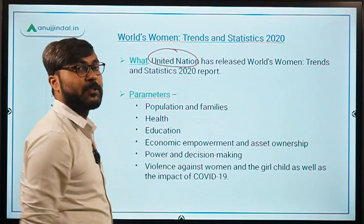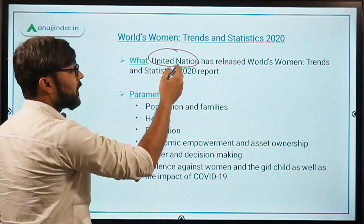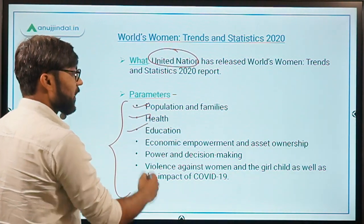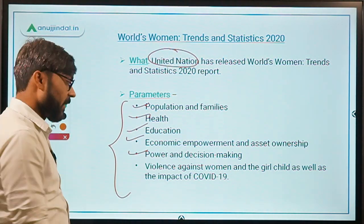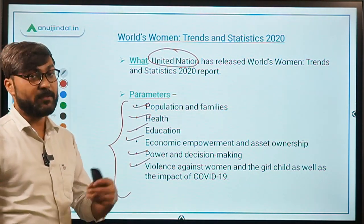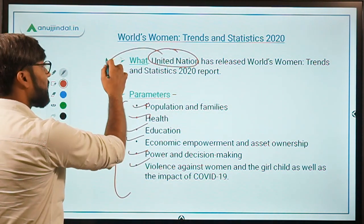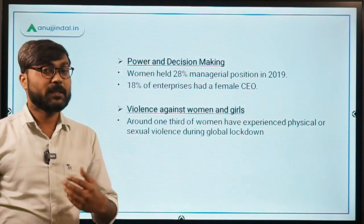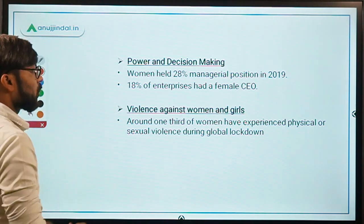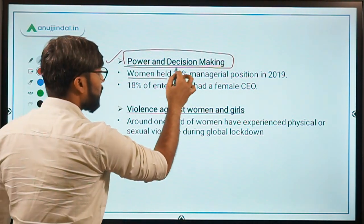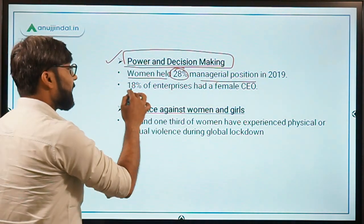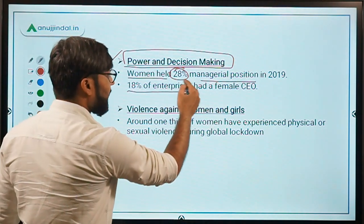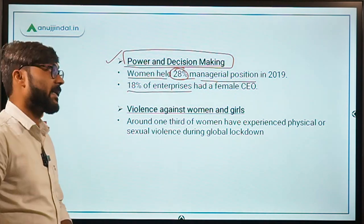This report has been released by the United Nations, whose chief is Antonio Guterres and which is headquartered in New York. The facts in this report are based on 6 parameters. In the power and decision-making area, women held only 28% of managerial positions in 2019, and only 18% of enterprises had women CEOs.